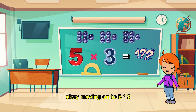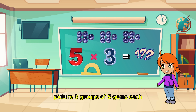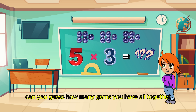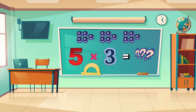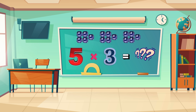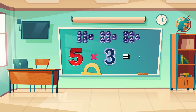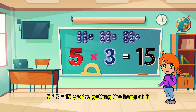Moving on to 5 times 3. Picture 3 groups of 5 gems each. Can you guess how many gems you have altogether? Brilliant! 5 times 3 equals 15! You're getting the hang of it!